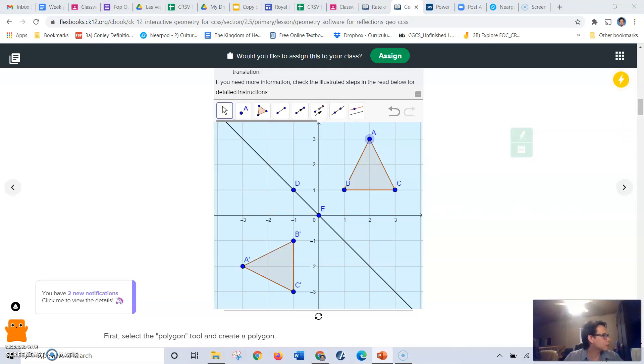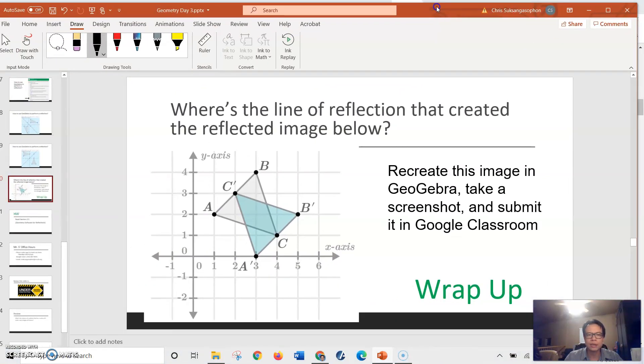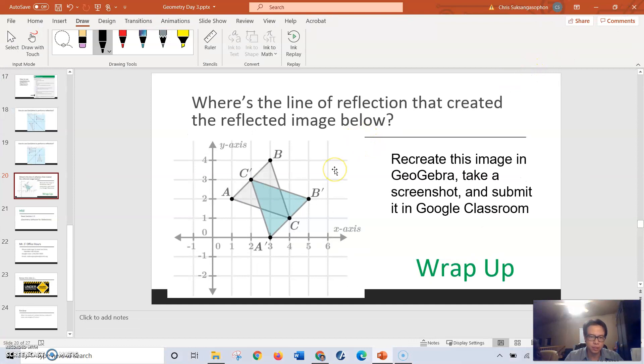And for your wrap up question, you're asked to recreate this image here in GeoGebra. Your job is to determine where that line of reflection might be. Here's a hint: you've got triangle ABC in which you're going to reflect across the line of reflection to produce triangle A prime B prime C prime. Give it a try, take a screenshot of your work, and submit it in Google Classroom. Good luck you guys.